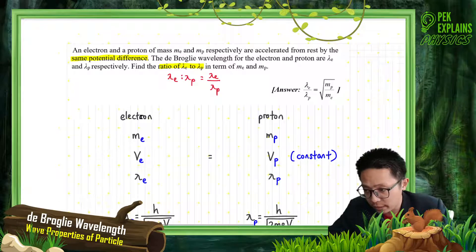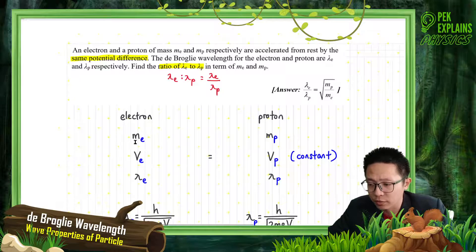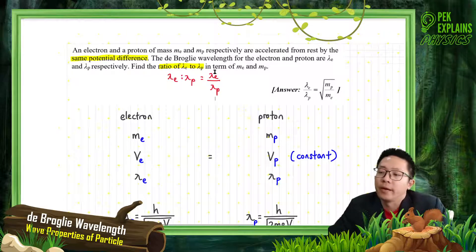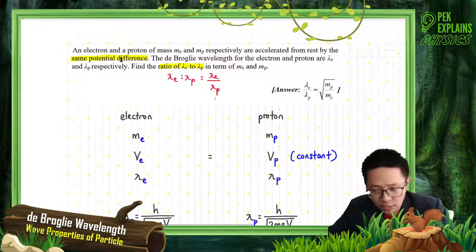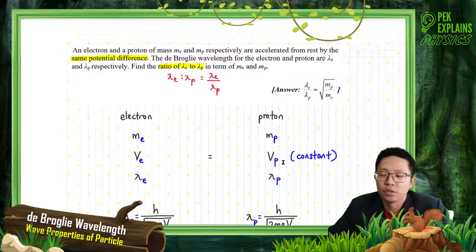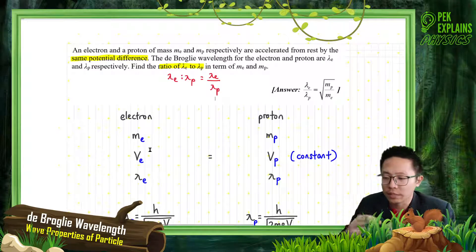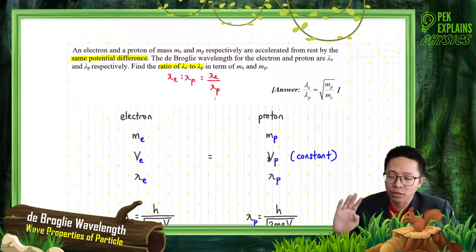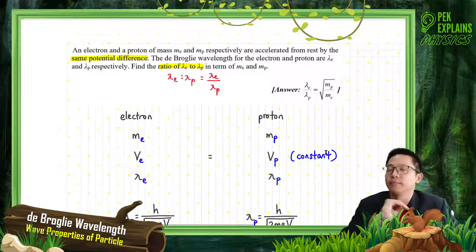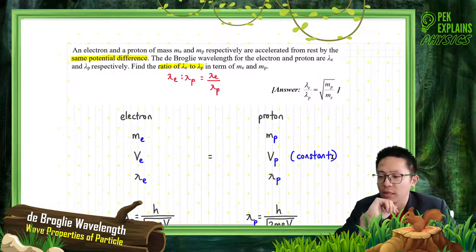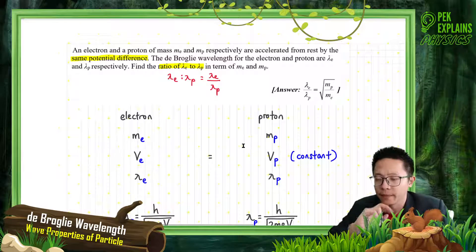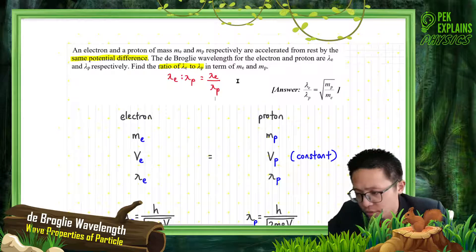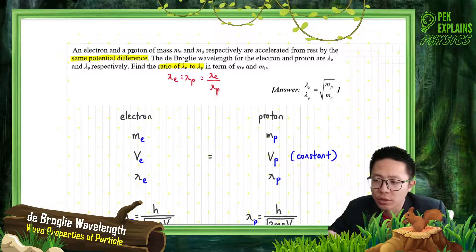So for electron, it has mass of electron. Proton has mass of proton. And they are accelerated from rest using the same voltage — same potential difference. That means voltage of electron equals voltage of proton. The voltage must be equal. This is important. So for these two conditions, the voltage is considered constant because same potential difference — the voltage doesn't change. You only change the electron to proton, but you maintain the same voltage.